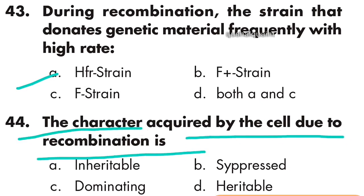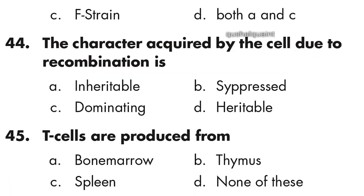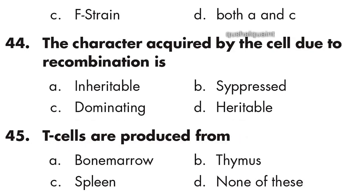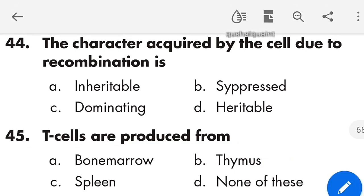Question 44: The character acquired by the cell due to recombination is heritable, option D is right. Question 45 is the last question: T cells are produced from the thymus, option B is right. Thank you for watching this video — if you found it helpful, please like and subscribe.